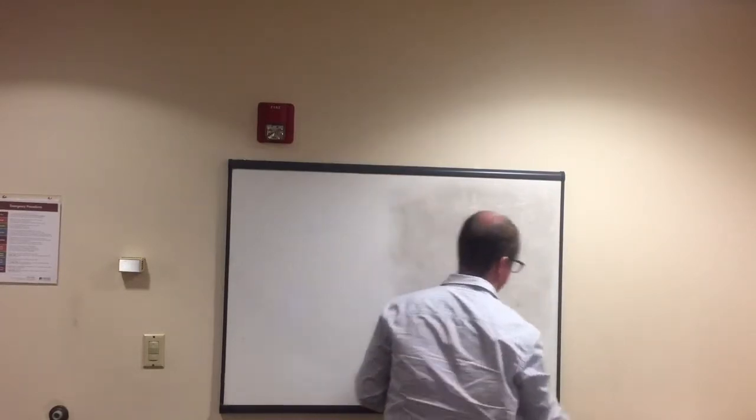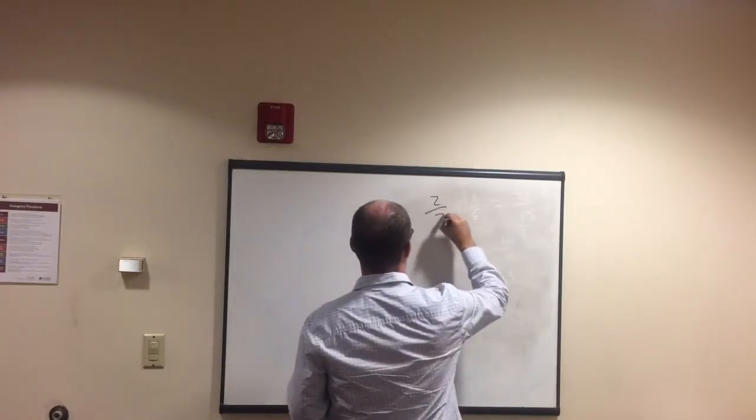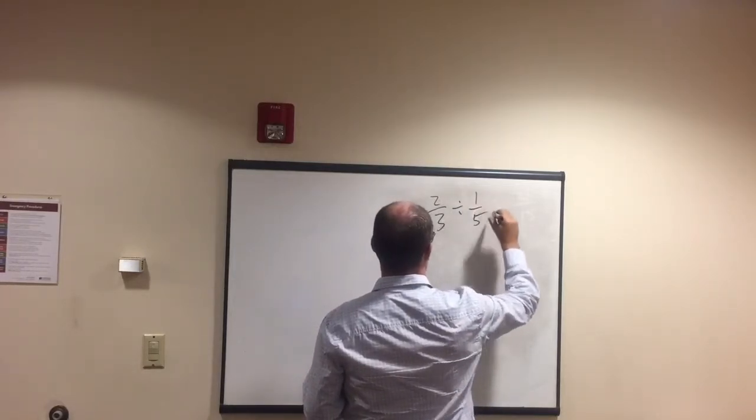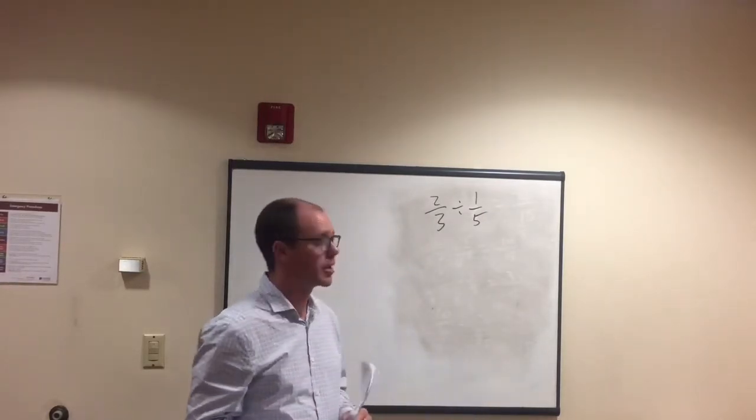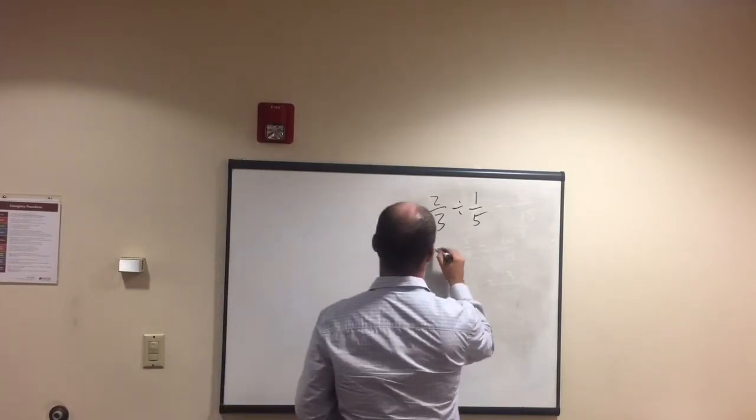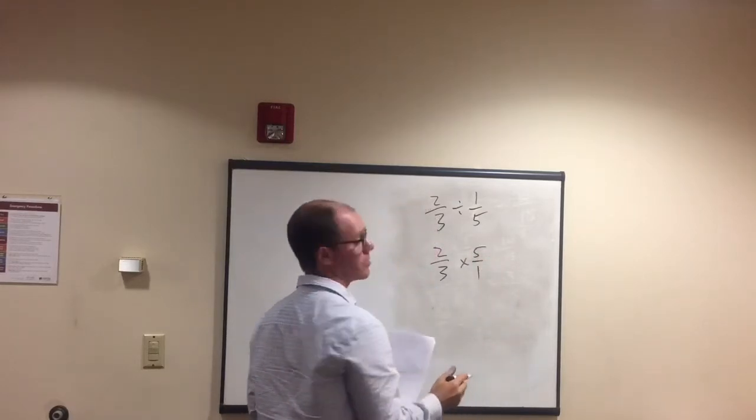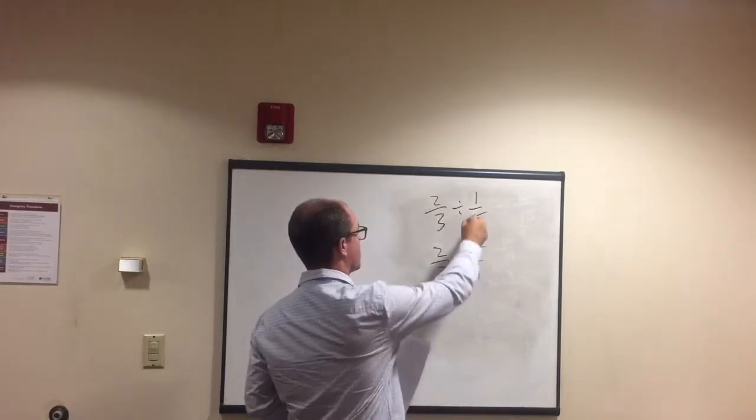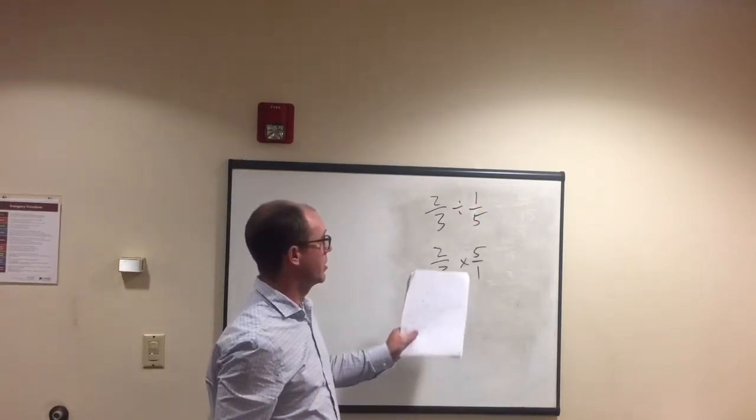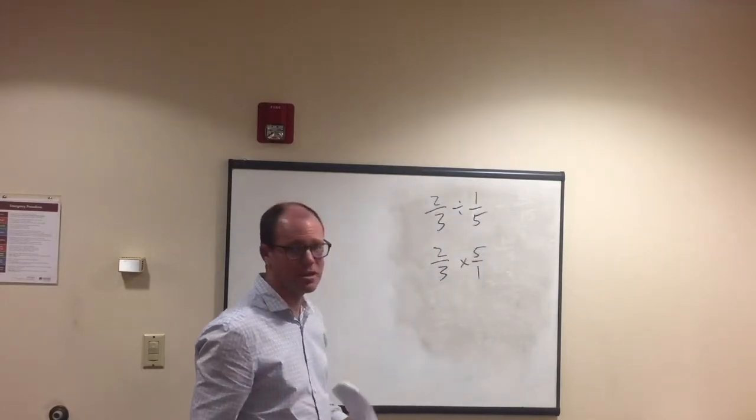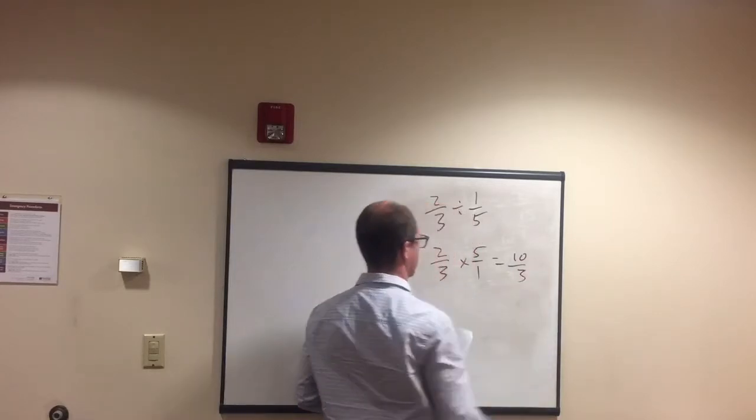And then dividing. Guess what? Same numbers. Two thirds divided by one fifth. Okay. So, this is the one where you have to flip. So, when you look at two thirds divided by one fifth, that equals two thirds times five over one. So, what we did is we flipped one fifth. So, now down here the five, that was the denominator, now the numerator. And the one that was in the numerator is now the denominator. And so, that equals ten thirds.